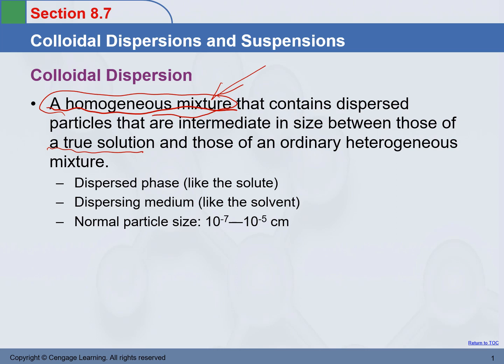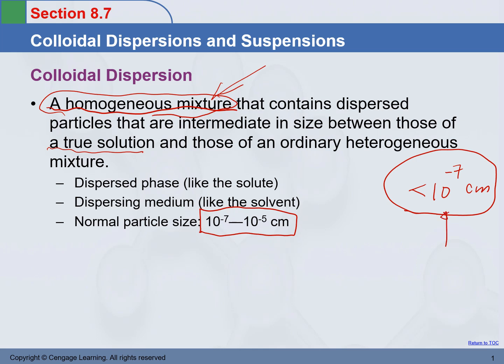The particle size in colloidal dispersion is between 10 to the negative 7 to 10 to the negative 5 centimeters. For a solution, it's less than 10 to the negative 7 centimeters. Those are the typical sizes for molecules, atoms, and ions.